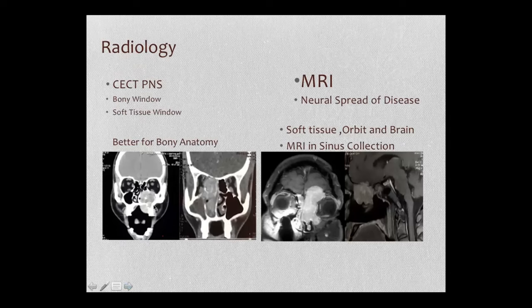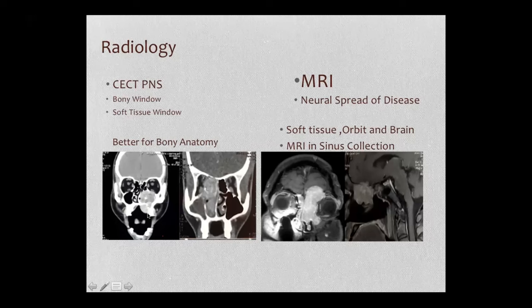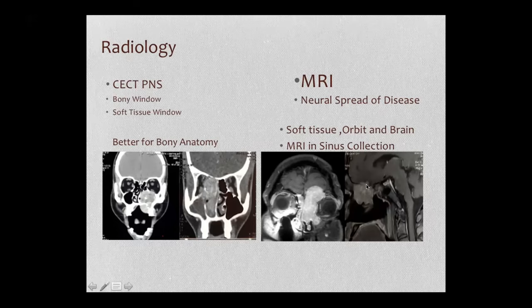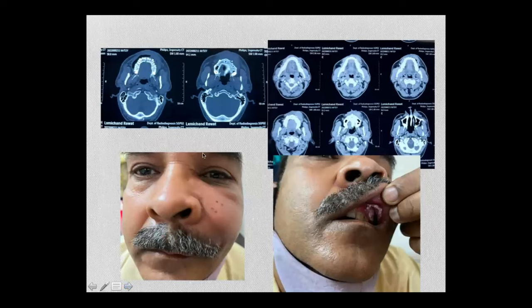If the tumor is limited to the maxilla with no orbital involvement, CT scan is sufficient. However, if there is no clear fat plane and the orbit may be involved, MRI is very useful to define the real extent — whether it is only the periorbita, muscles involved, or dural involvement less than or greater than five millimeters. MRI is particularly valuable for soft tissue delineation.